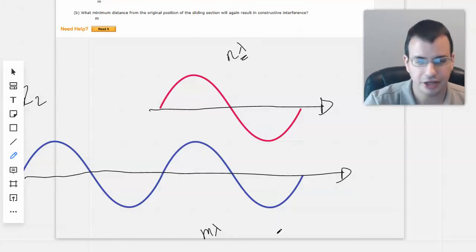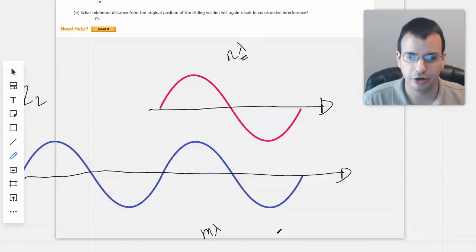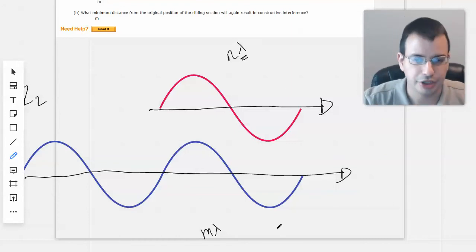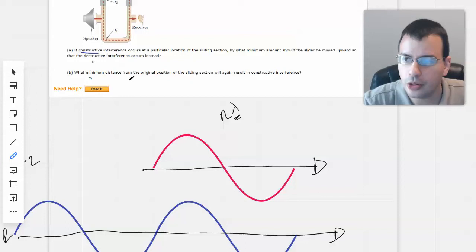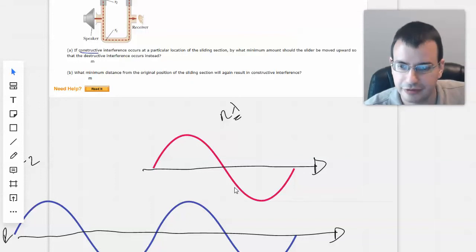And so when they match up to each other, the peaks match and the troughs match. Therefore, the highs reinforce the highs, the lows reinforce the lows, and the averages don't really do much at all. And so this is what we're starting with, and saying that we're going to move it such a way that we want destructive interference.